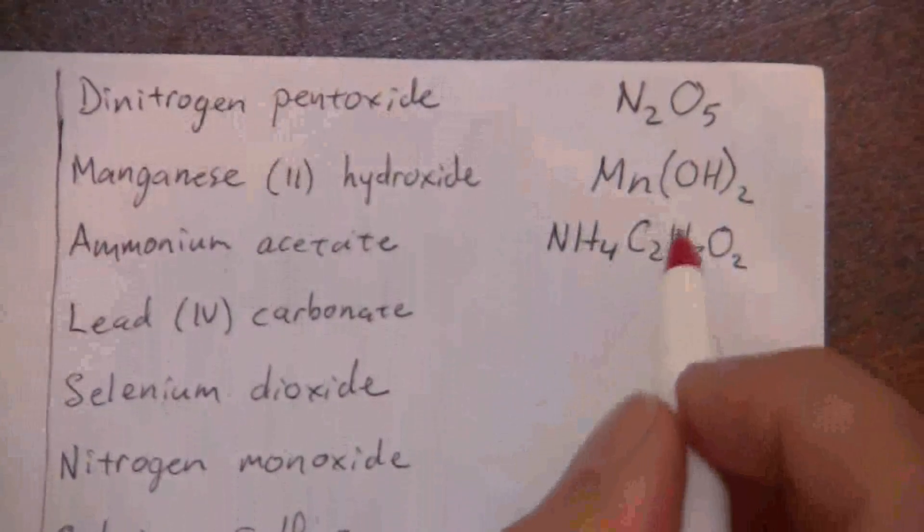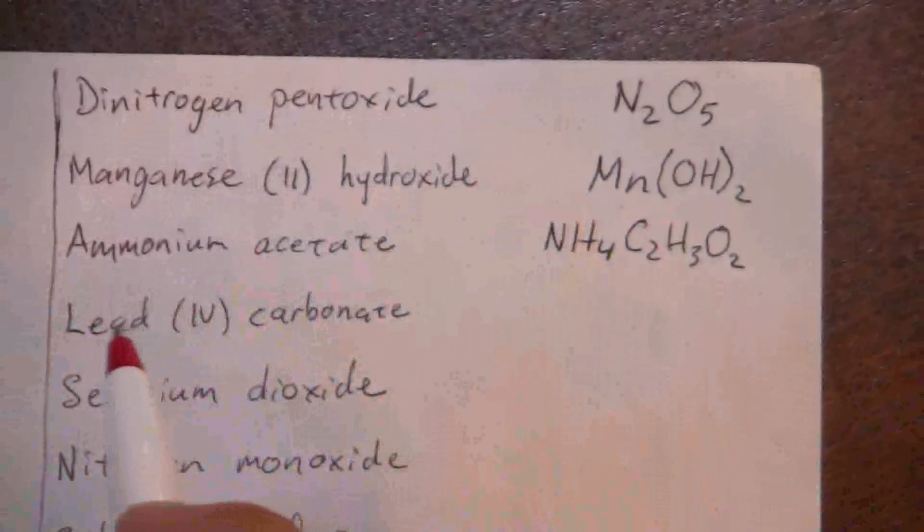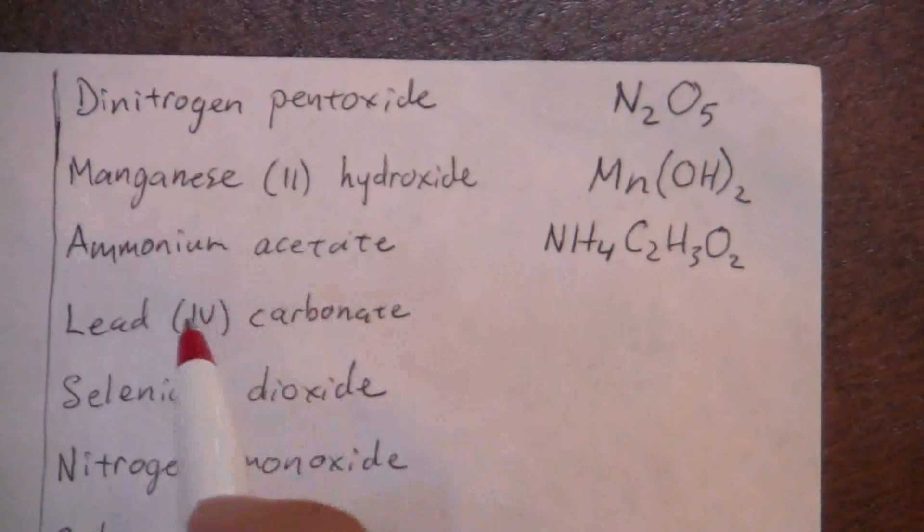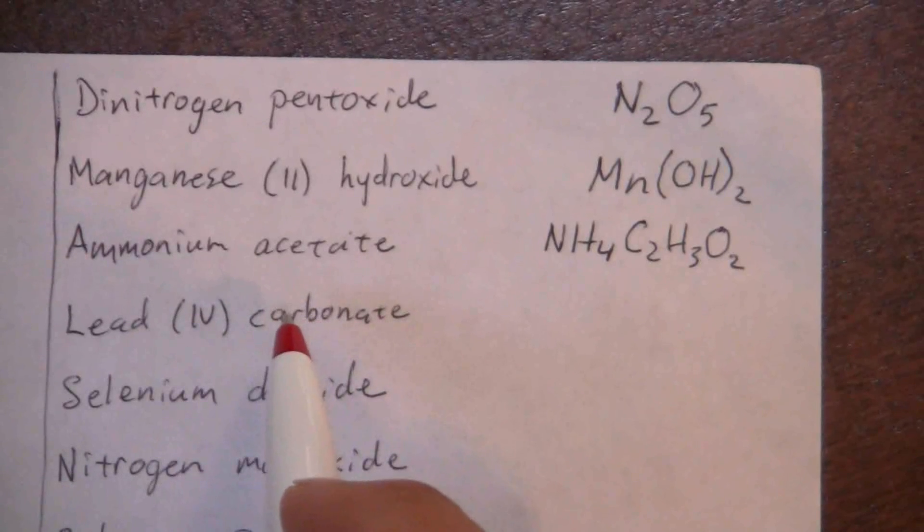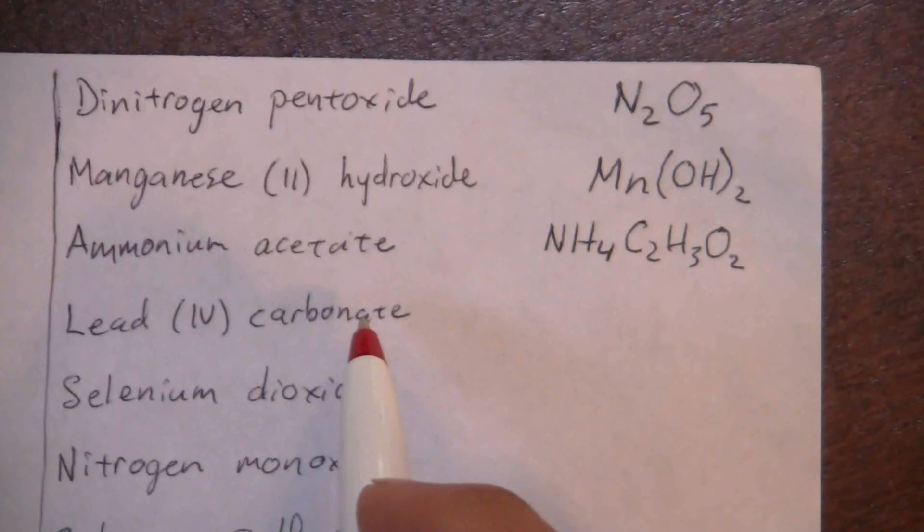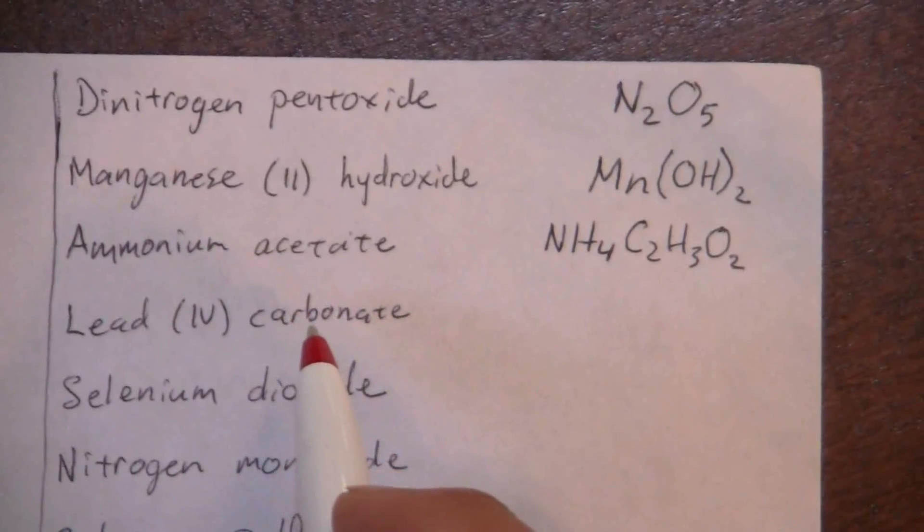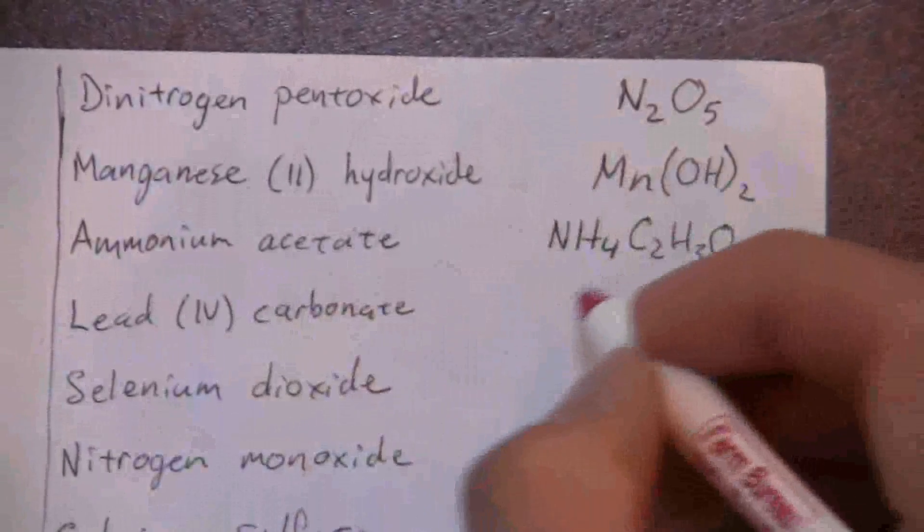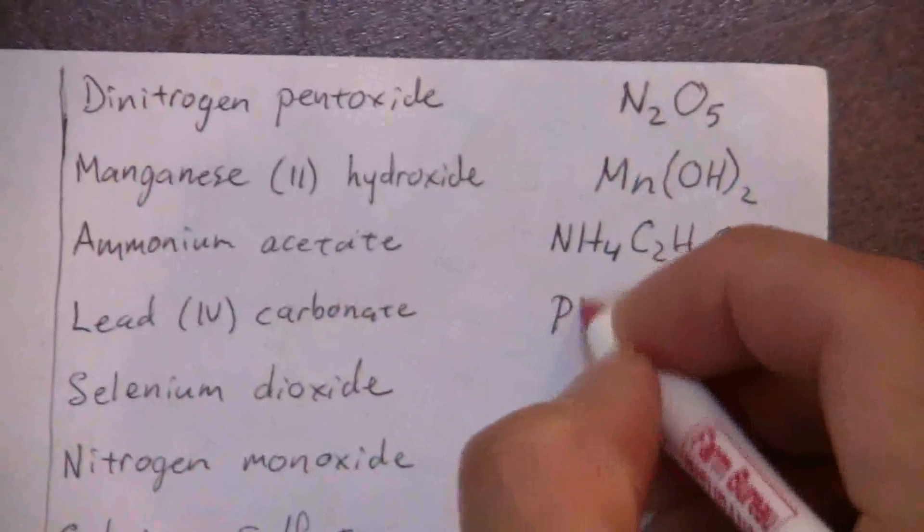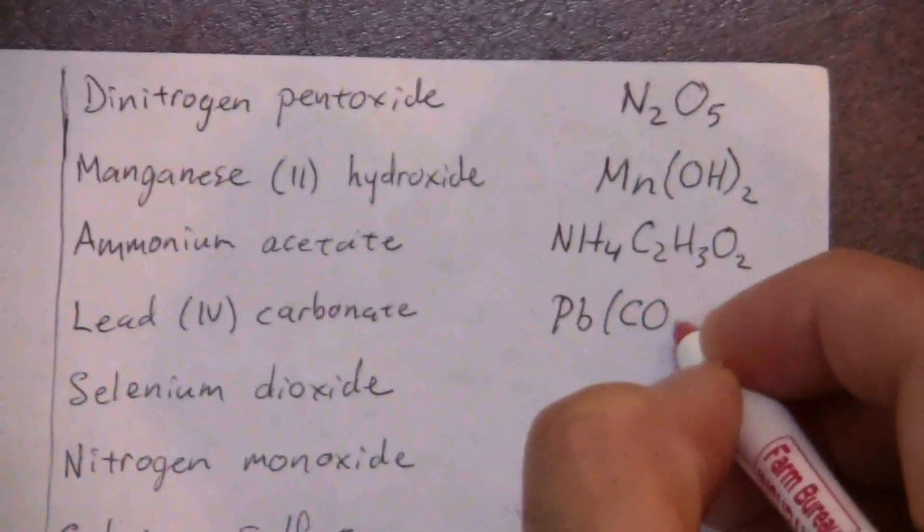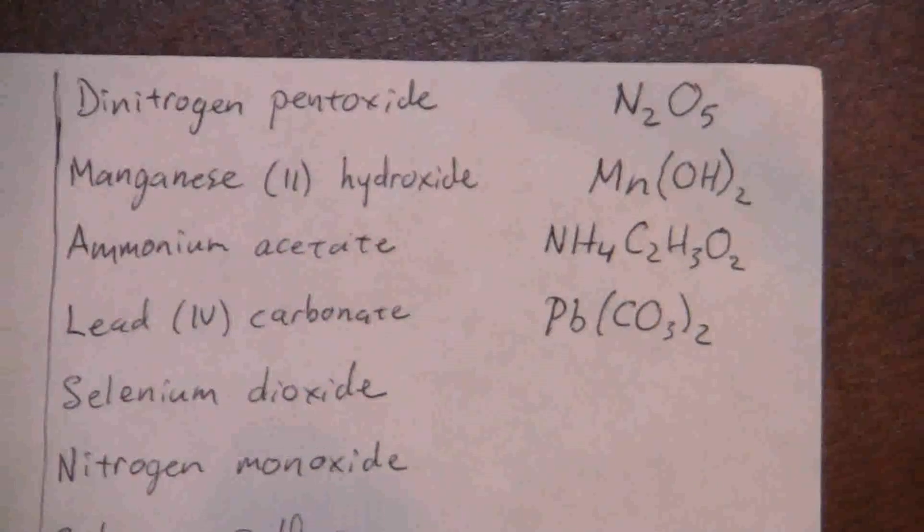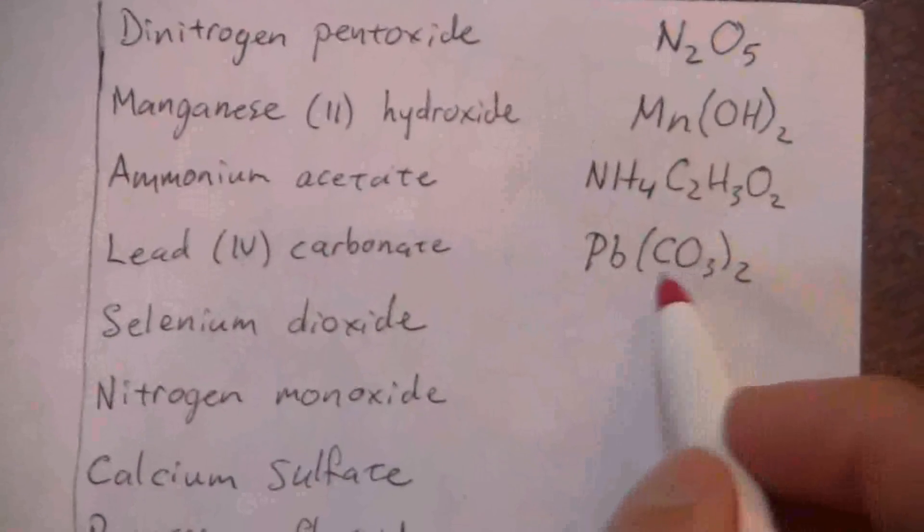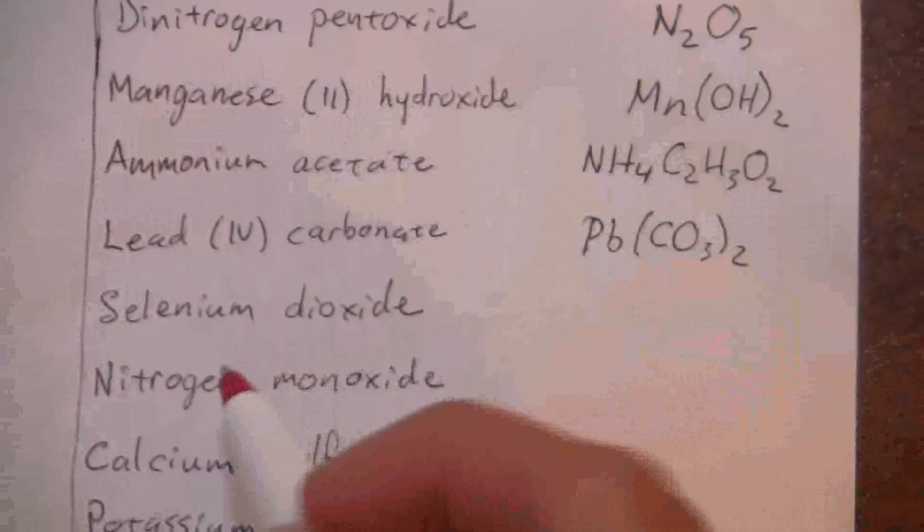Here we have lead (IV) carbonate. The charge of the lead is four and carbonate is CO3 with a negative two charge. So how many carbonates do I need to balance out the positive four of the lead? I need two, so Pb(CO3)2. Again, parentheses because of the polyatomic ion.